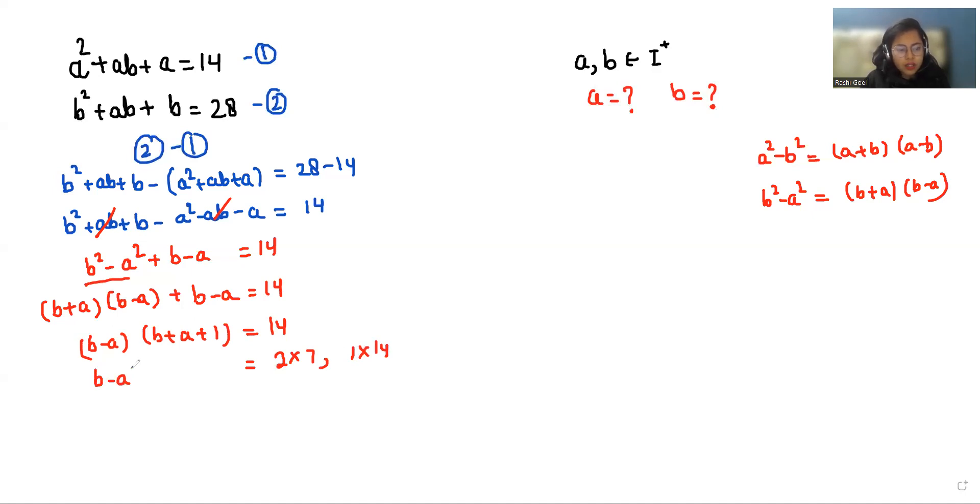So now 4 cases arise. Case 1 when b - a = 2, then b + a + 1 = 7. Then b - a = 1, and then b - a = 14.